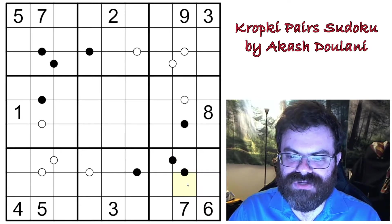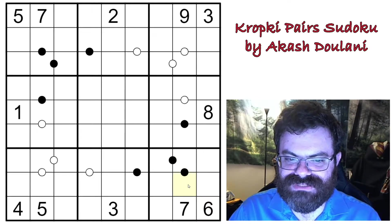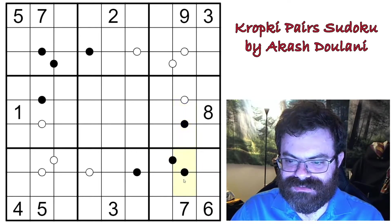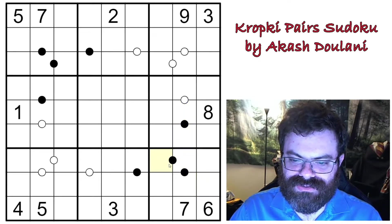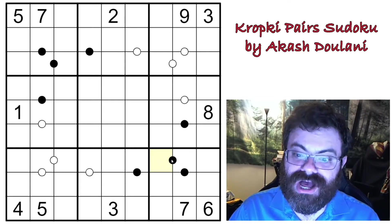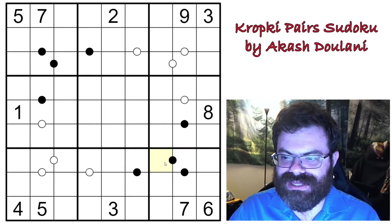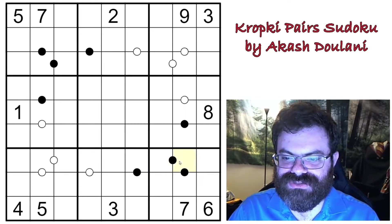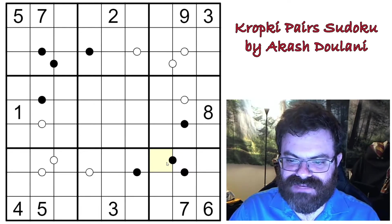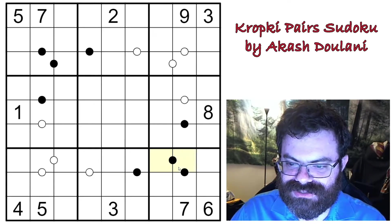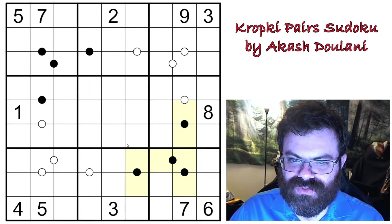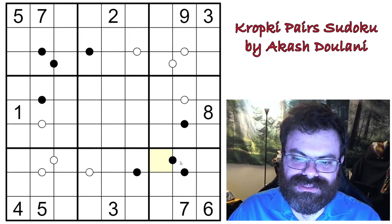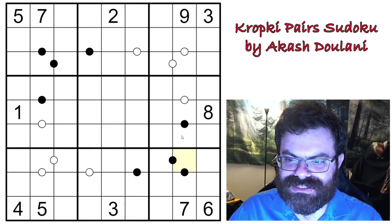Notably, you can't have a five, seven, or nine on a black dot — because what would you put with it? Seven is odd, so you can't divide it by two, and anything over four multiplied by two gives ten or higher. So five, seven, and nine can't be there. On the black dots we're limited to one, two, three, four, six, or eight. That's something to watch out for.